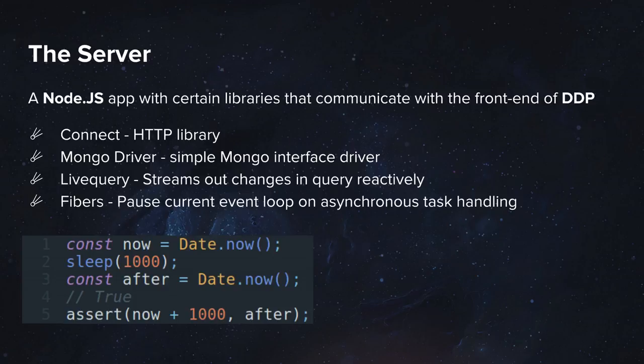Live Query means that once the client runs a query against the database and there was a change in the result of the query, then the server is going to stream these changes, and therefore you can readjust your data accordingly. The server also uses fibers to handle asynchronous tasks.